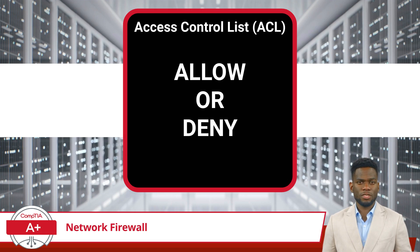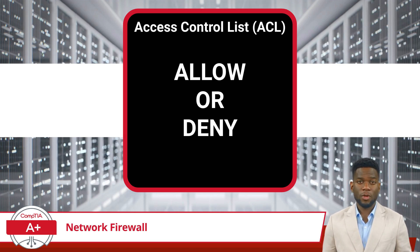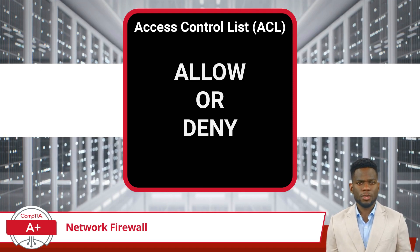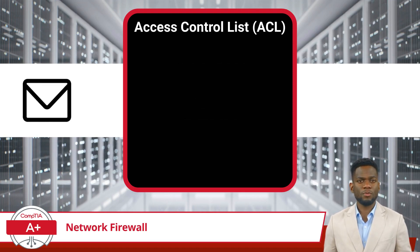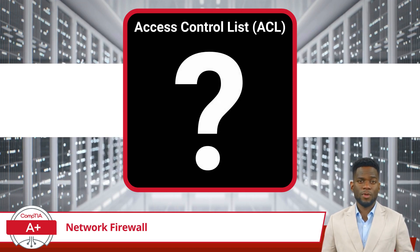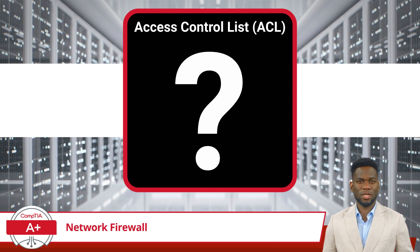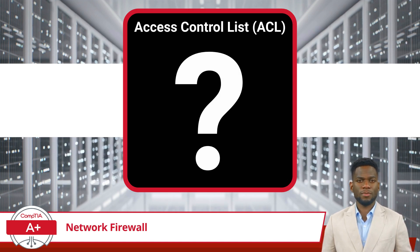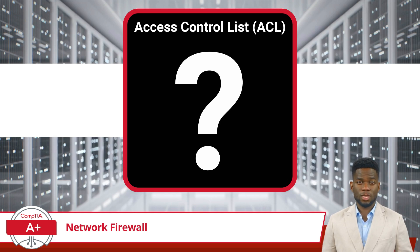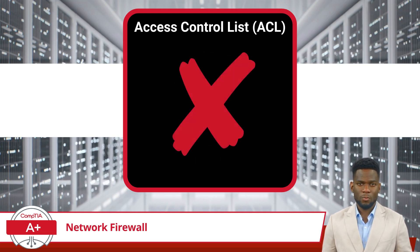Access control lists are essentially a set of rules that dictate what types of network traffic are permitted and what types should be blocked. As a data packet is received by a network firewall, the firewall compares the data packet against the security rules listed in its access control list. If the data packet does not match any of the allow rules in the access control list, the data packet will be denied.